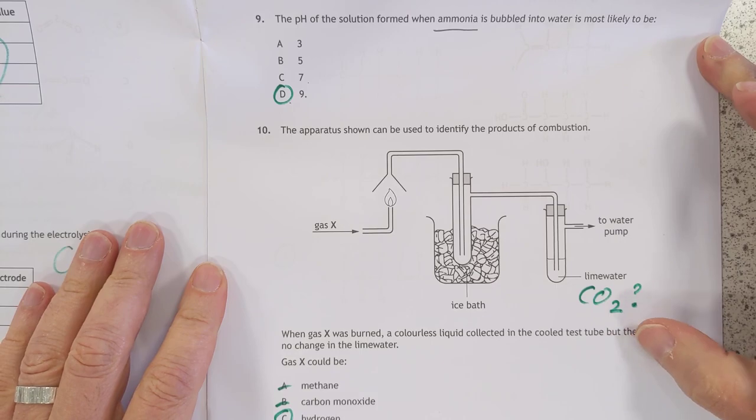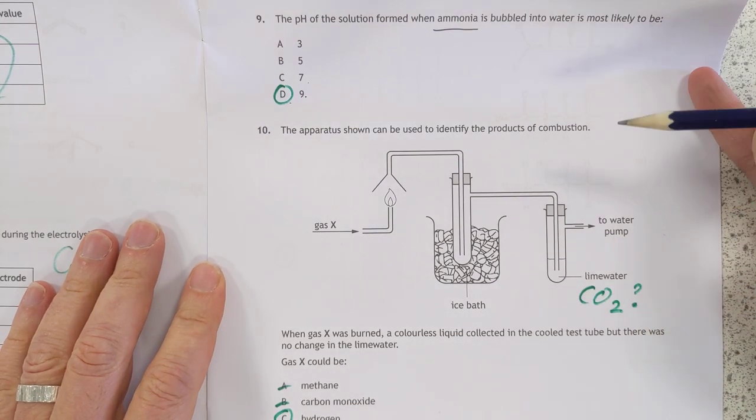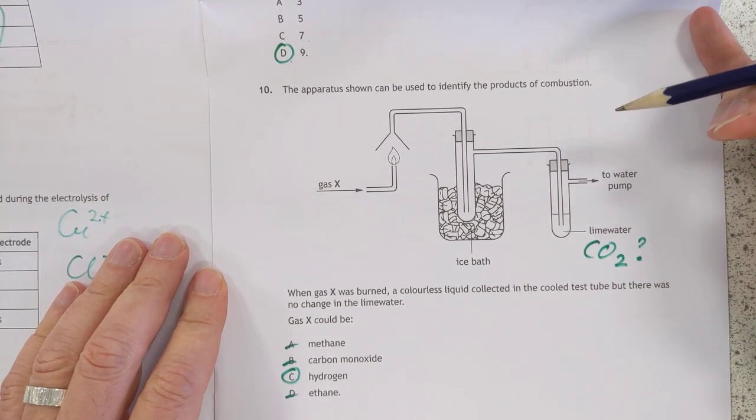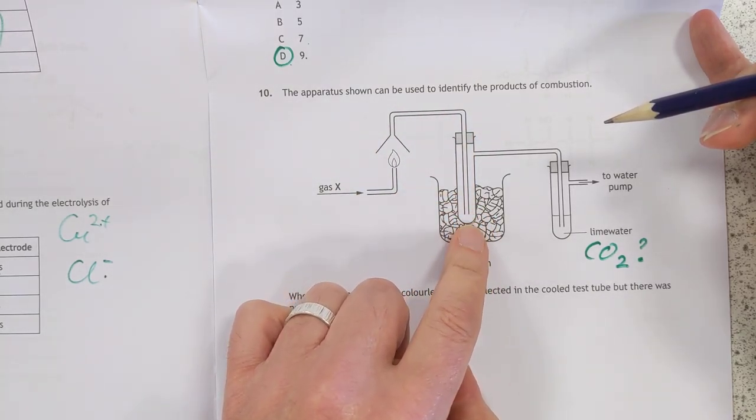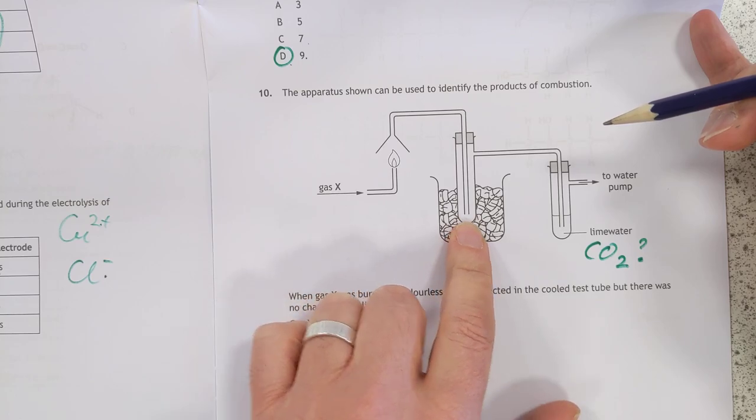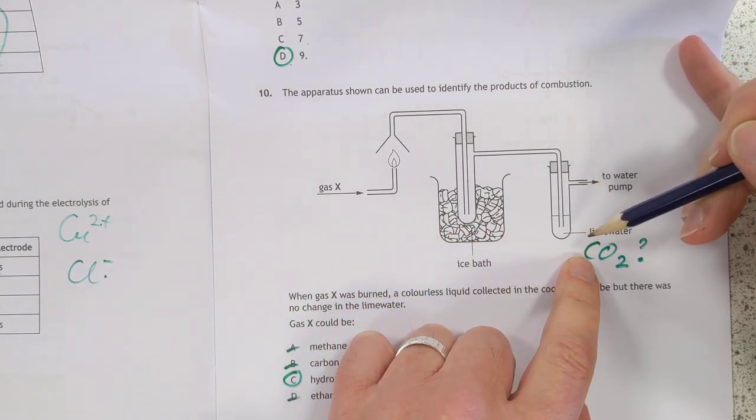Number 10. This is an interesting one. It's quite a sneaky one, this one. We've got gas X, it's being burned. It's coming through this, we've got an ice bath, so that will cool this test tube down here to 0 Celsius. And last of all, we've got it bubbling through lime water.